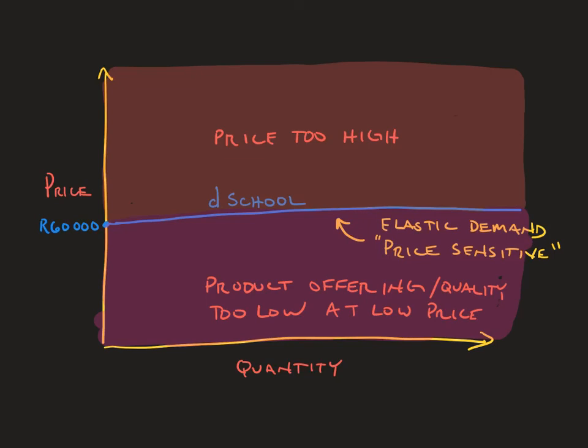So to recap, elastic demand and its graph shows a situation where the price is almost constant. If the price were to go up, people would stop enrolling in a school or stop buying a certain product. If the price were to go down, it would mean that for whatever reason the product on offer couldn't be offered at that price, or it'd be such a terrible quality that people would not be interested in buying it.